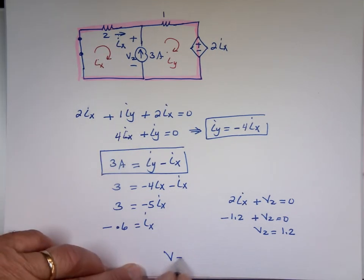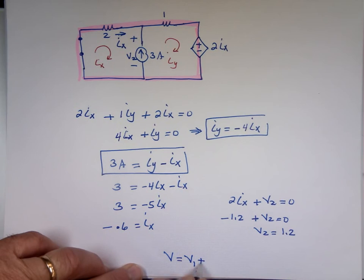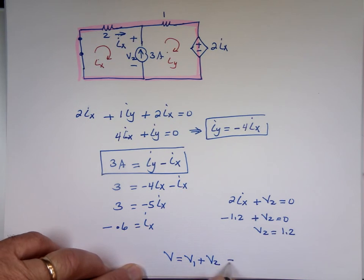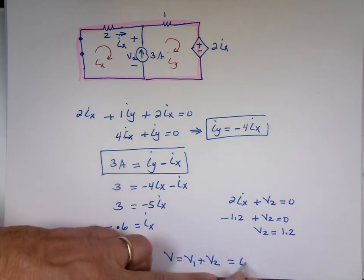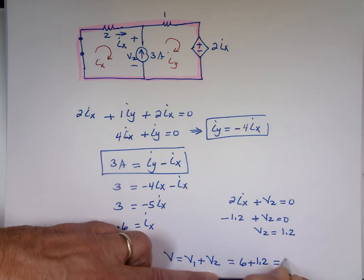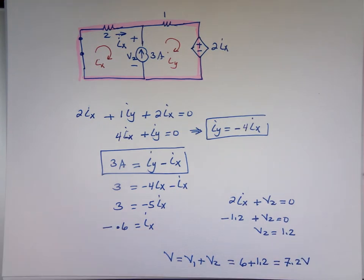Can we figure out what V equal to? V equals V1 plus V2, which is, what was V1? I forgot. 6 volts. Plus 1.2, which is what? 7.2 volts. If you get 3 sources, you got to do the problem 3 times. 4 sources, 4 times.